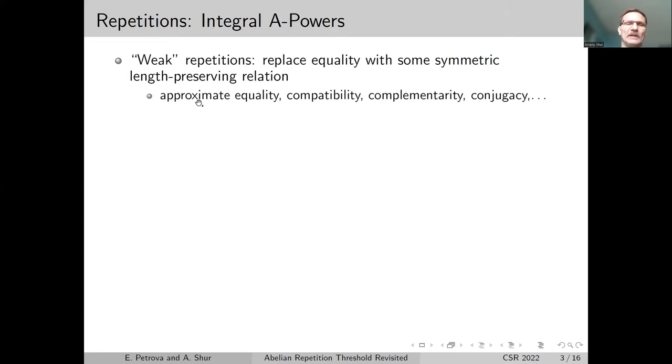There are a lot of examples. We can consider approximate equality up to some Hamming distance, compatibility when you define some relation on the alphabet, or complementarity like Watson-Crick complementarity from bioinformatics. Maybe the most well-known weak repetition is constituted by abelian repetitions, which are based on the notion of abelian equivalence.